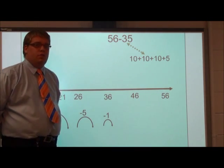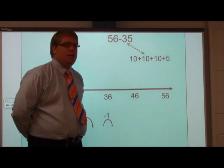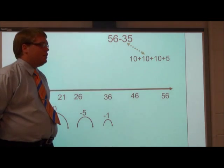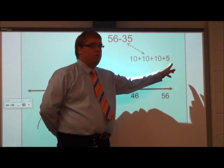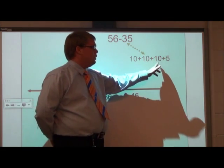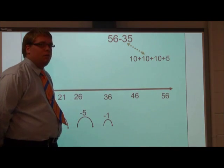We are going to break our subtrahend, the smaller number 35, up into tens and fives. So we will have 10 plus 10 plus 10 plus 5, which is the same as 35. So 56 minus 10 plus 10 plus 10 plus 5 will be the same as 56 minus 35.